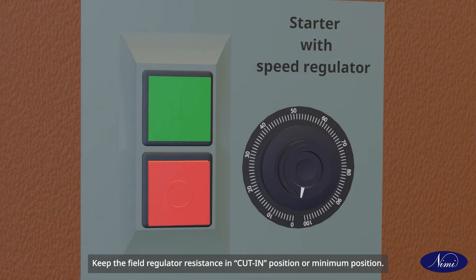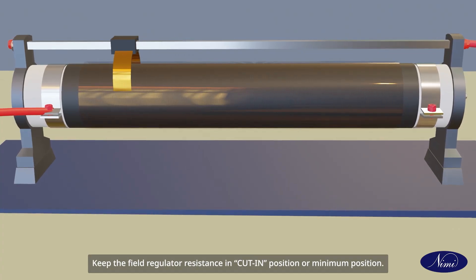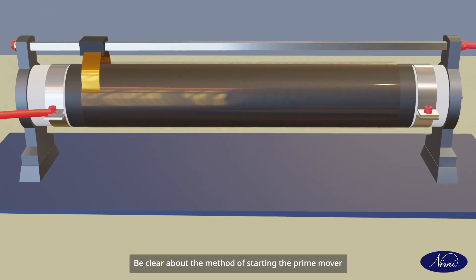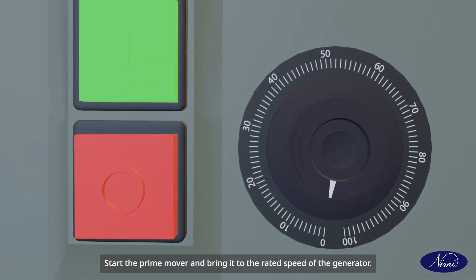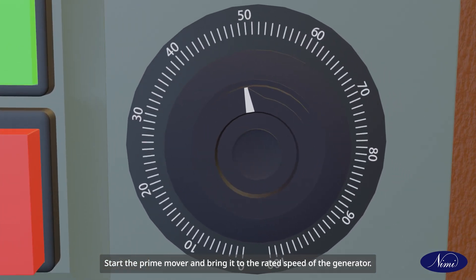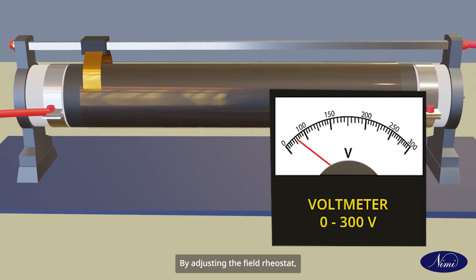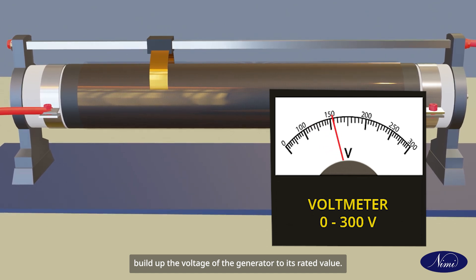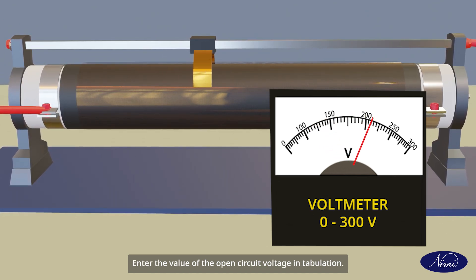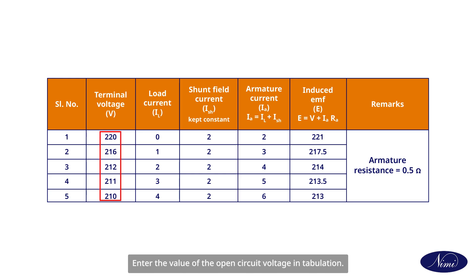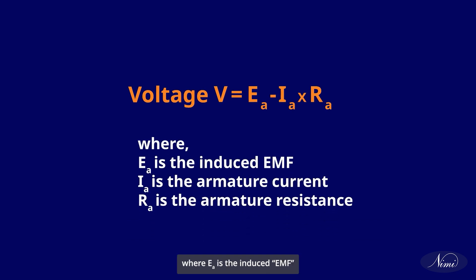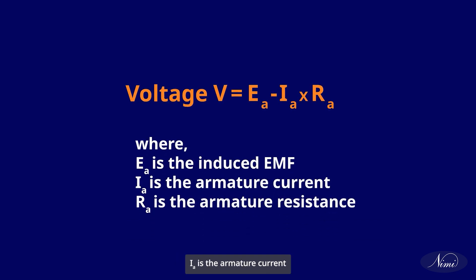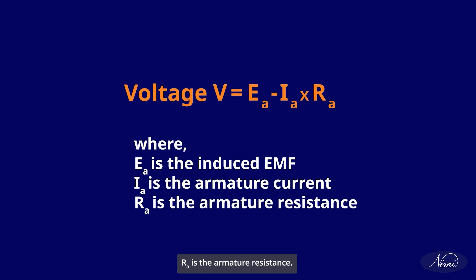Keep the load switch open and switch off all the circuit switches in the lamp load. Keep the field regulator resistance in cut-in position or minimum position. Be clear about the method of starting the prime mover and the procedure of adjusting its speed. Start the prime mover and bring it to the rated speed of the generator. By adjusting the field rheostat, build up the voltage of the generator to its rated value. Enter the value of the open circuit voltage in tabulation. Determine open circuit voltage: V = E − (Ia × Ra), where E is the induced EMF, Ia is the armature current, and Ra is the armature resistance.